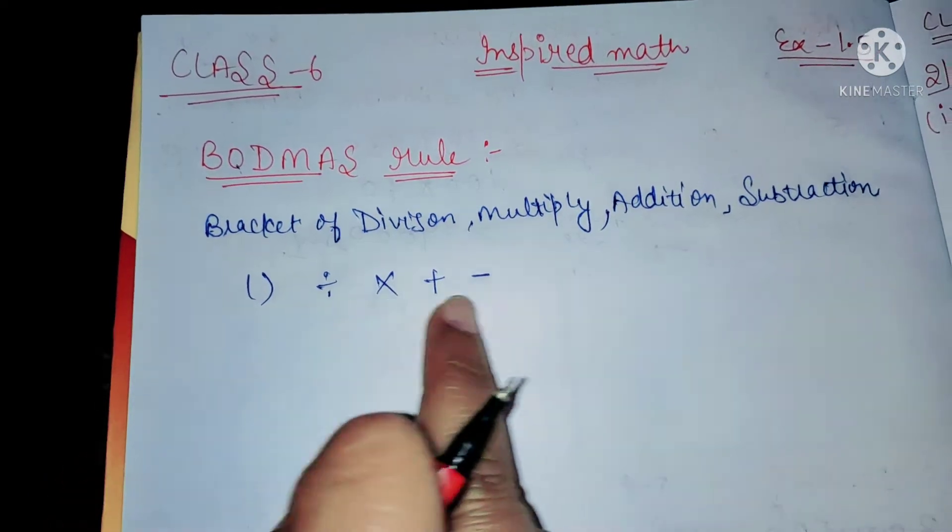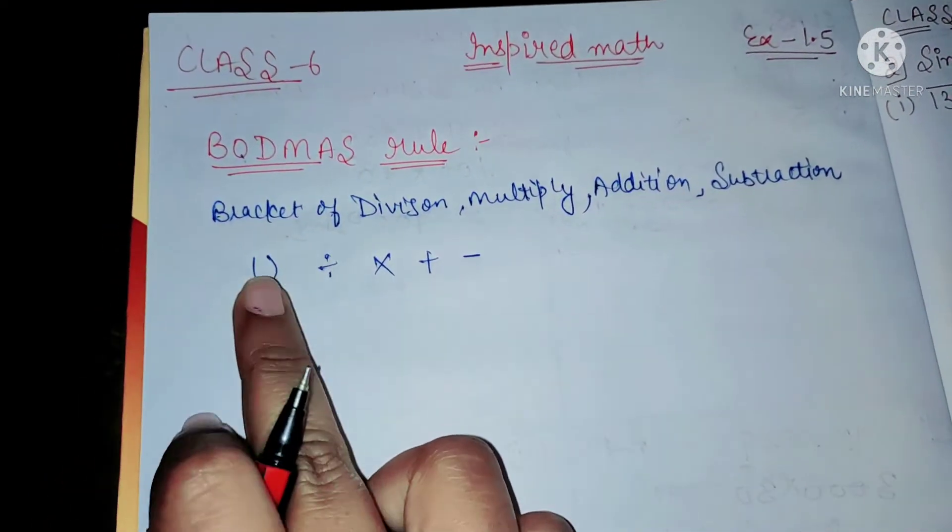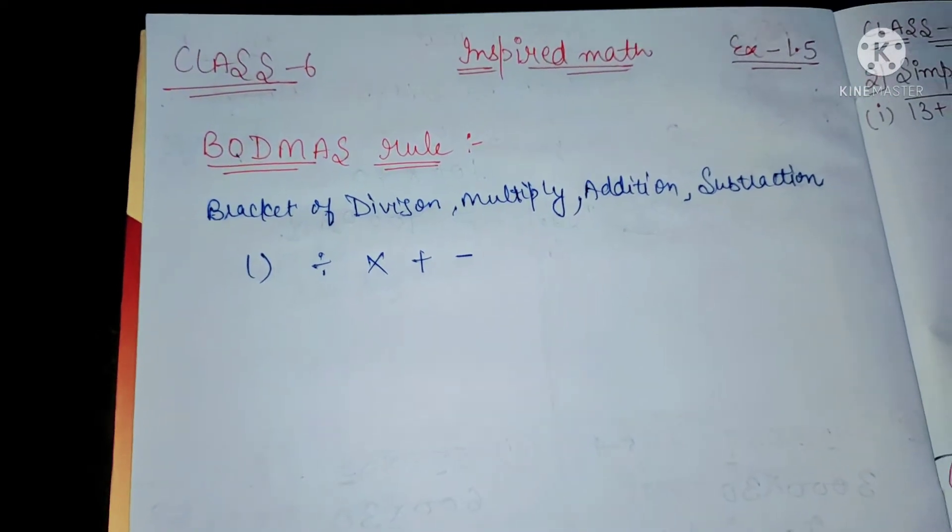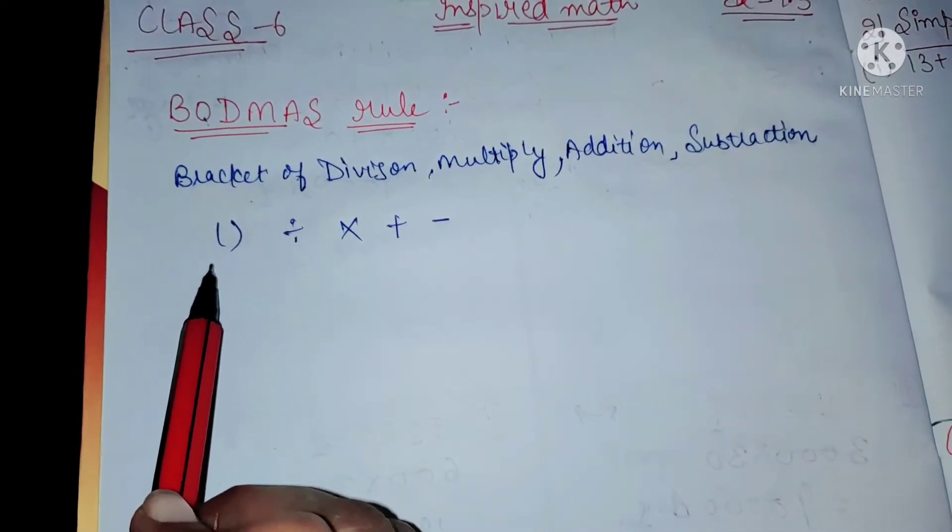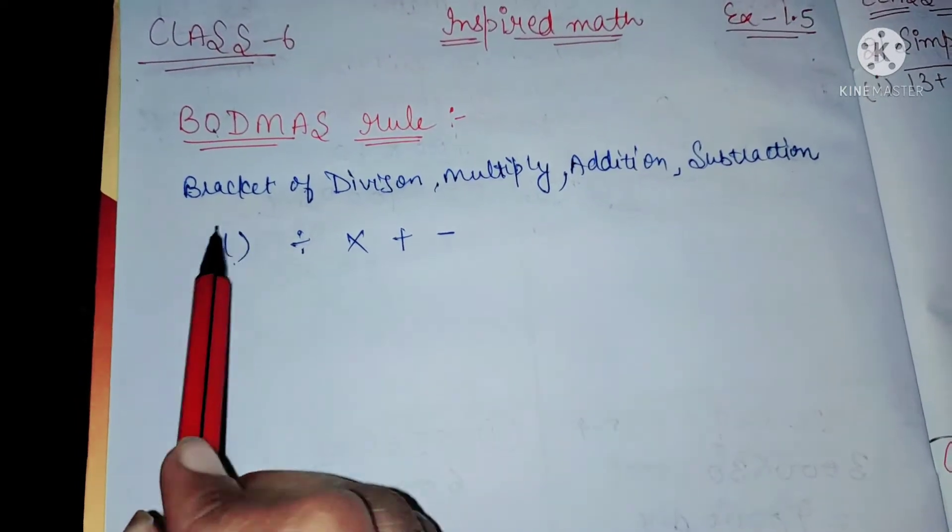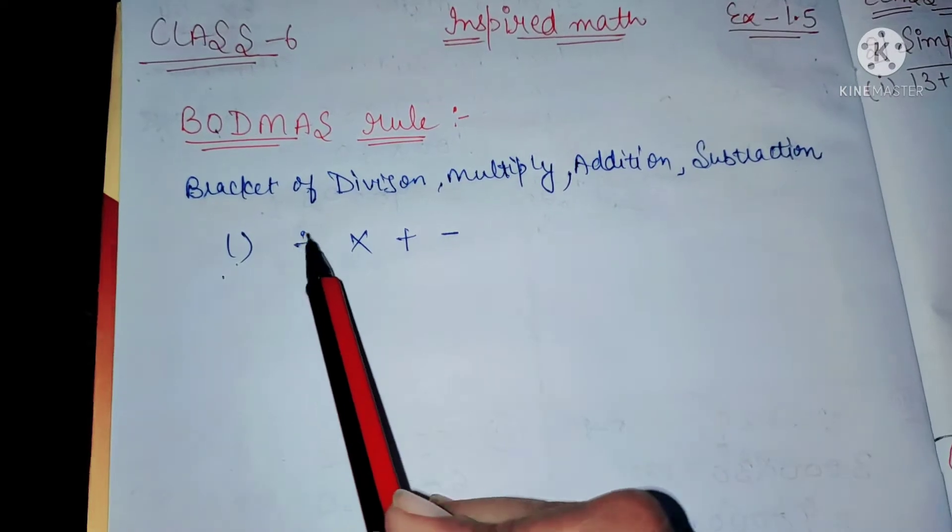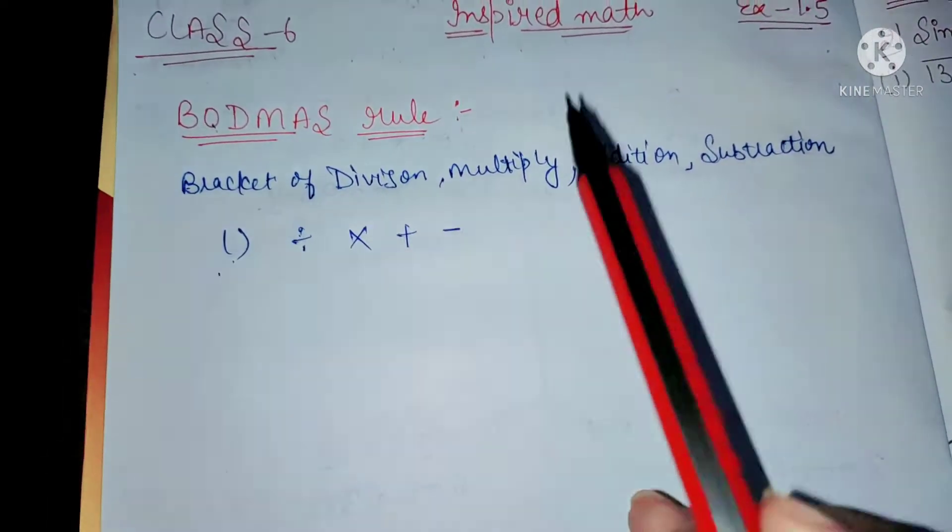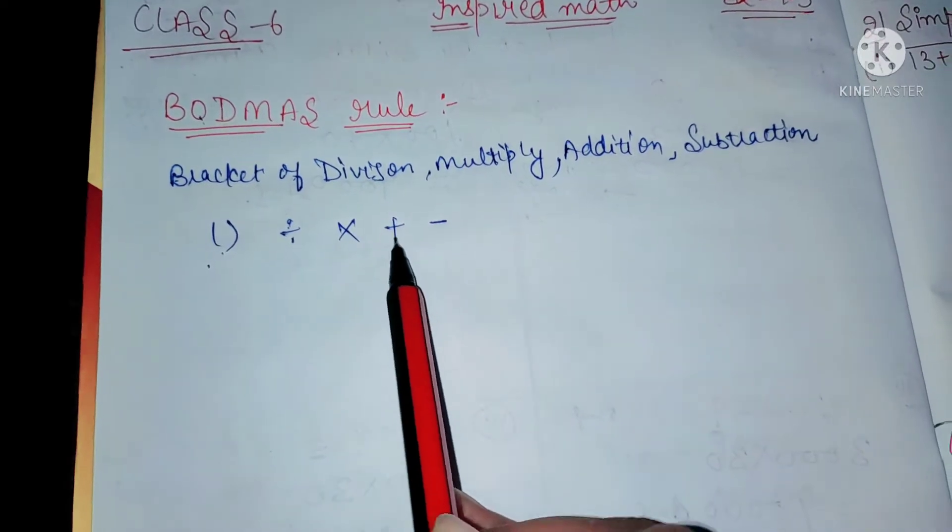According to this, solve brackets first, then division, then multiply, then addition, then subtraction. This is the hierarchy of solving any mathematical equation. For example, if our statement has any bracket, solve that first. After it, if they contain any division, then division. After division, multiply, then add, and last we will do subtraction.